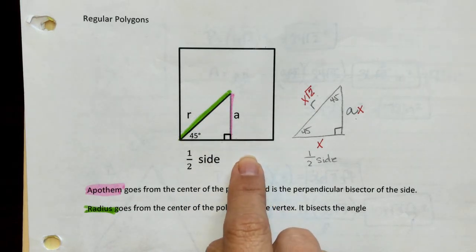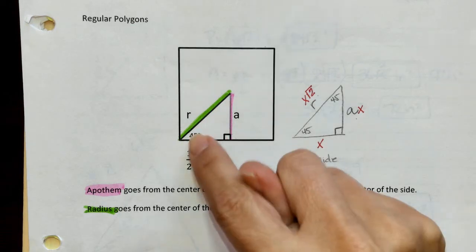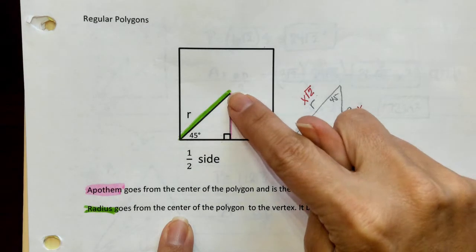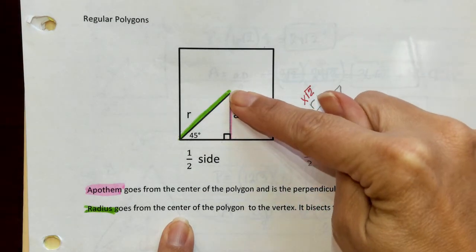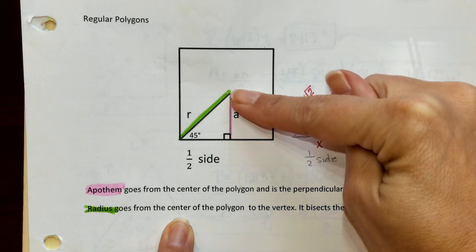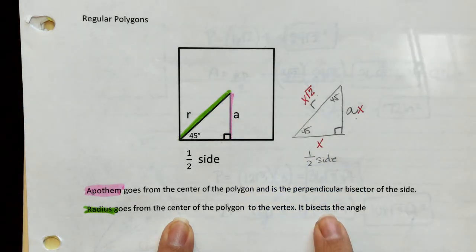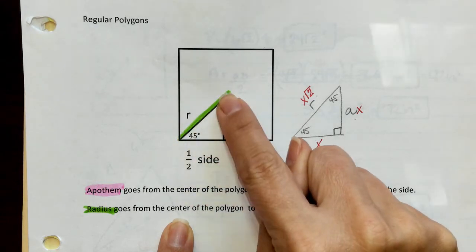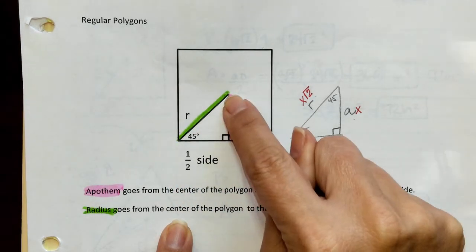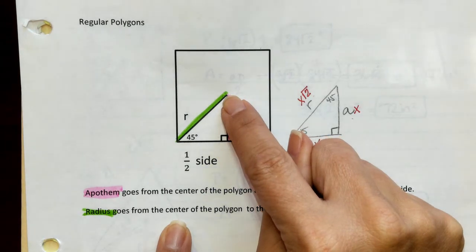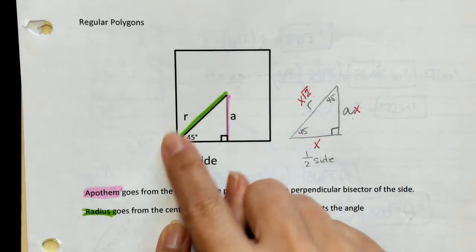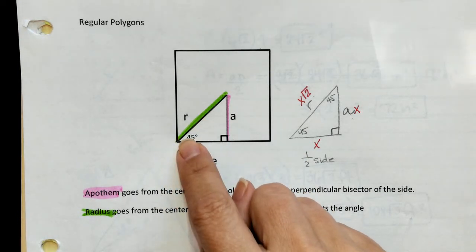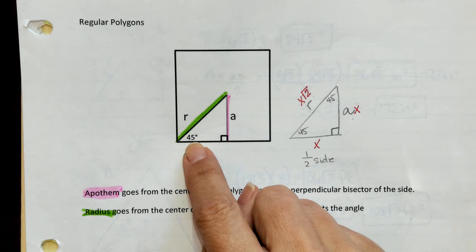Look what it forms for us. The line coming from the angle to the center of the polygon is your radius — it will bisect the angle. Here I've put the radius in green, going from the vertex angle to the center of the polygon. This polygon is a square, so we know that each angle of a square is a 90-degree angle. Therefore, the radius will bisect it into a 45.